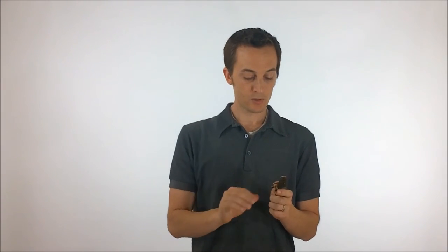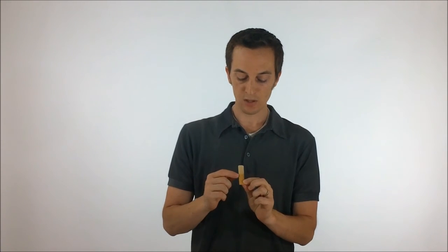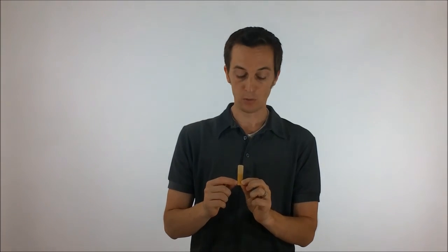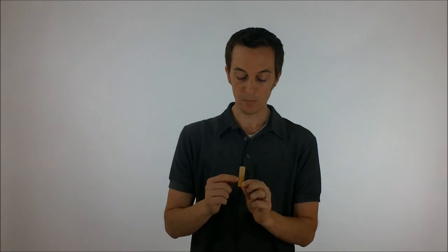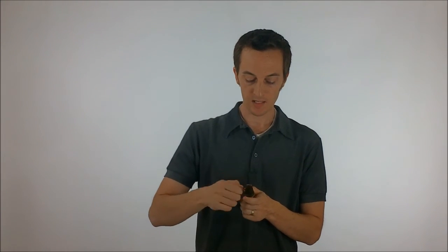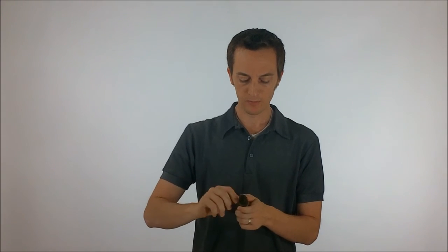And then, where do I put the ligature? Even though the ligature is already on the mouthpiece, you need to make sure that it is touching the bark portion of the reed only. Not the cut portion, but the bark portion only. And once you do that, you go ahead and tighten up the screws. And they don't have to be super tight, just a firm fit.